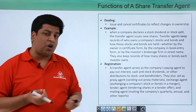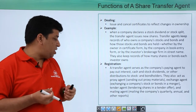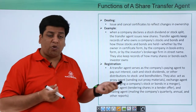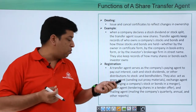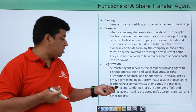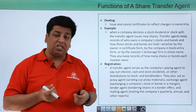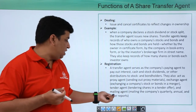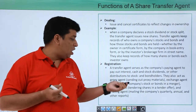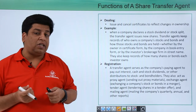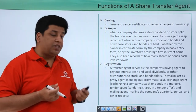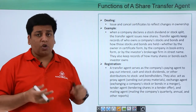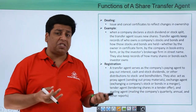Other roles include acting as an exchange agent — exchanging a company's stocks or bonds in a merger — a tender agent, tendering shares in tender offers, and a mailing agent, mailing the company's quarterly, annual, and other reports to its investors or stakeholders.